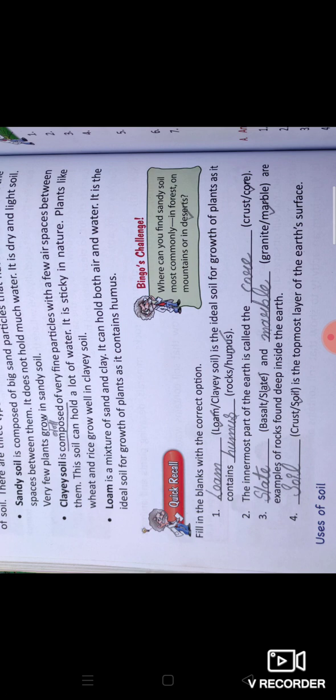Loam is a mixture of sand and clay. It can hold both air and water. It is the ideal soil for growth of plants as it contains humus. Loam soil is a mixture of sand and clay. It has air and water. It is ideal soil for plant growth.